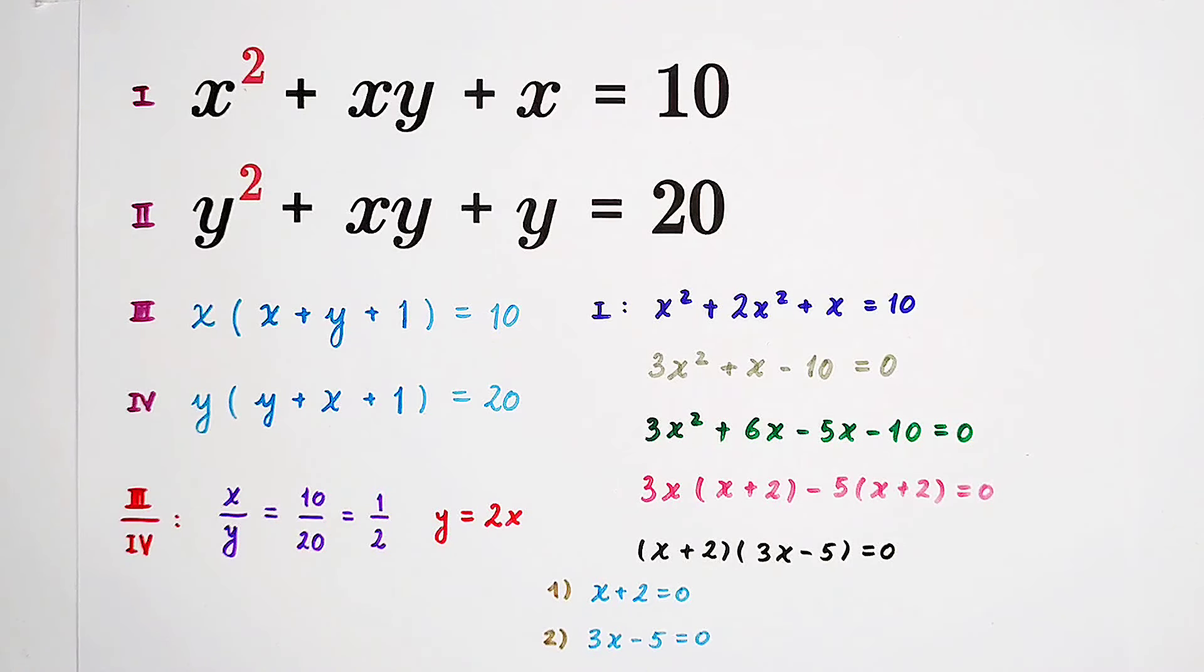We solve for x in each case. In the first case, x equals negative 2. In the second case, x equals 5 over 3.